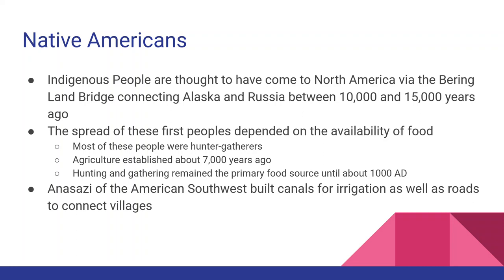Many moved into Mexico and Central America, and then others moved into Canada and the United States. The spread of these Native American groups depended primarily on the availability of food. Most of these indigenous groups relied on hunting and gathering. Farming in the Americas is actually brand new — it doesn't begin until about 7,000 years ago, and even then it's still the secondary source of food up until about 1,000 AD. There are even some tribes who never farmed much at all, especially those along the coastal areas.